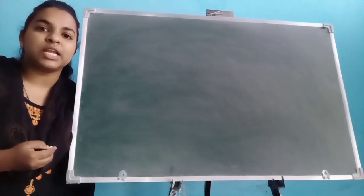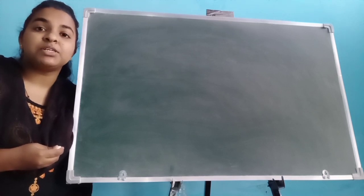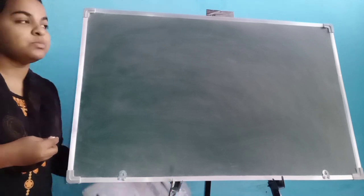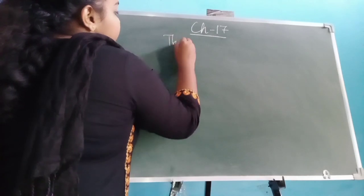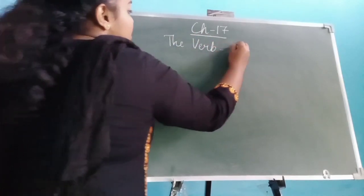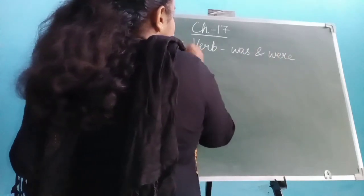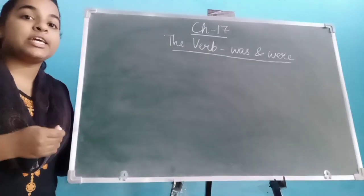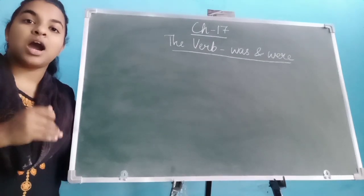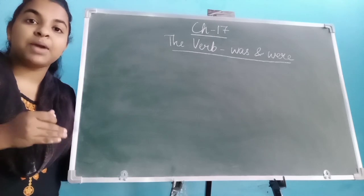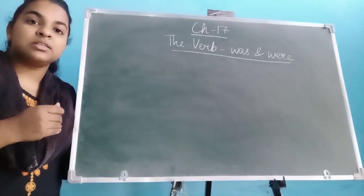Good morning students. Welcome back to class, subject English. In the last class we started the new chapter, that is Chapter 17 - the verb 'was' and 'were'. Was and were are the past forms of 'is' and 'are'. We use 'was' for singular form and 'were' for plural form.